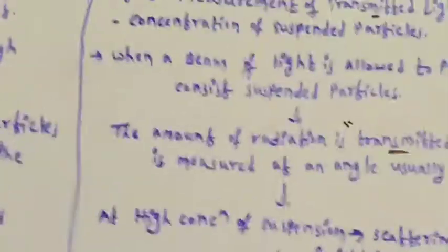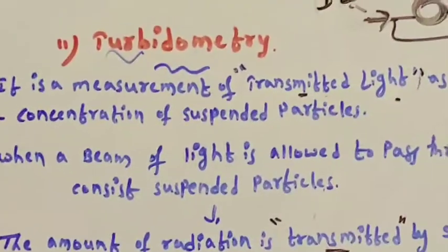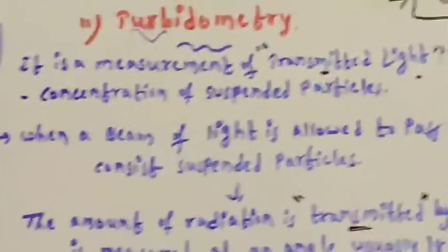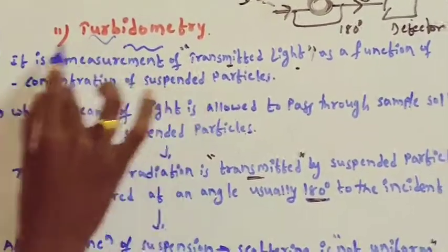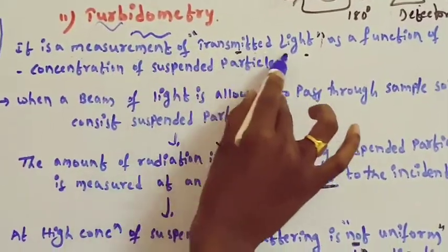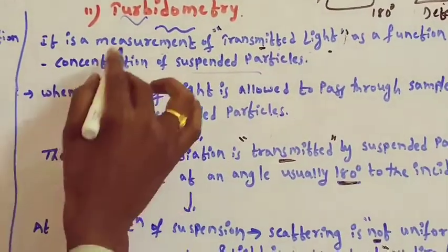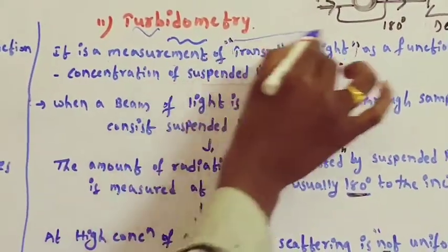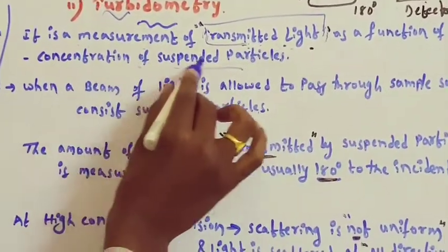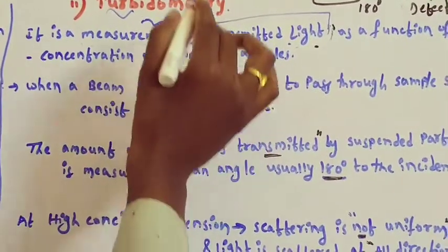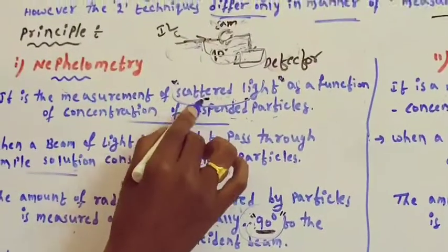Now, turbidimetry — turbid means nothing but high concentration suspension. Turbidimetry is the measurement of transmitted light as a function of concentration of the suspended particles. In turbidimetry, we measure transmitted light; in nephelometry, we measure scattered light. That is the key difference to observe.